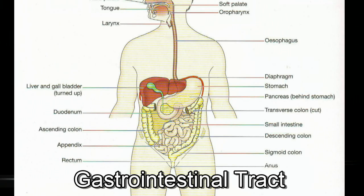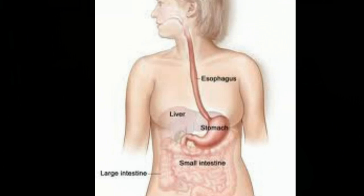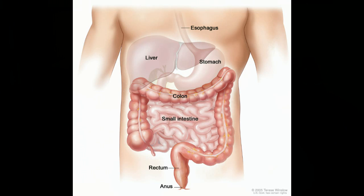GI bleeding is a very common condition that occurs when there is bleeding in the gastrointestinal tract. The bleeding may occur anywhere in the GI tract between the mouth and the anus. The most common site of bleeding in the upper intestinal tract includes the esophagus, the stomach, and the first portion of the small intestine called the duodenum. The most common site of lower GI bleeding is the colon.